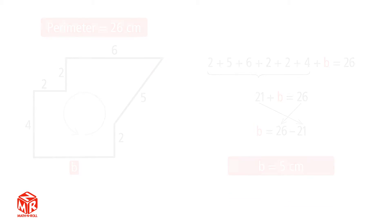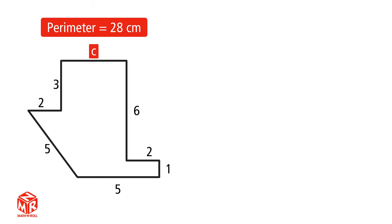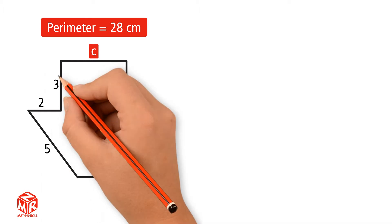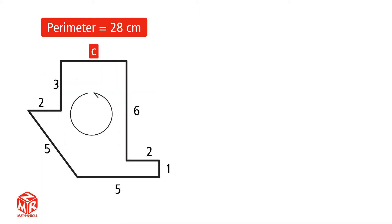Let's try another example. In this example, we have to find the unknown side length C. We know the other side lengths and the perimeter is 28 centimeters. Write the equation for the perimeter. Start at one side and make sure that you only count each number once. We're going to start at 3 and we're going to count the sides counterclockwise.